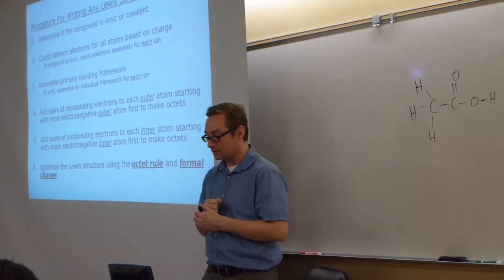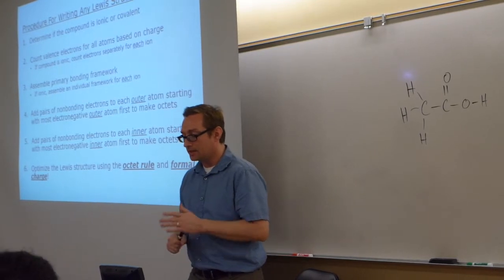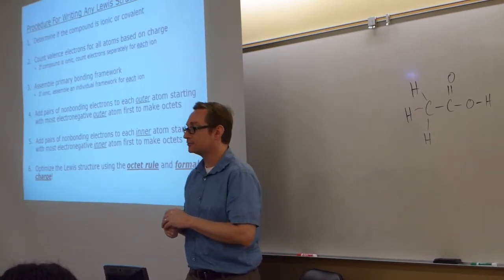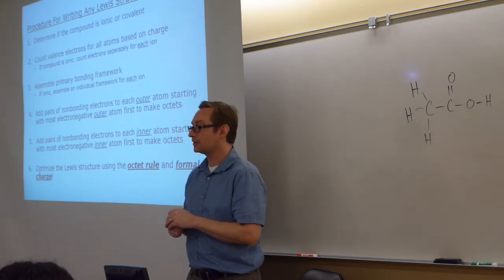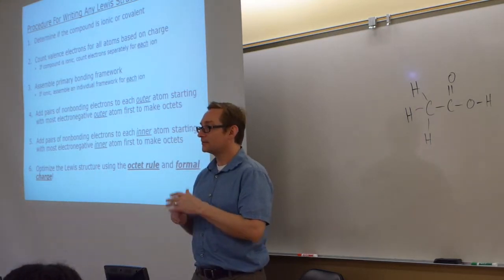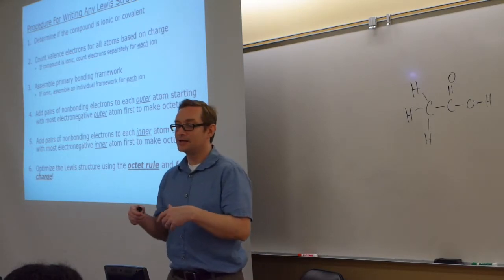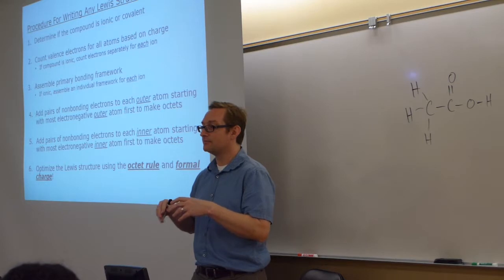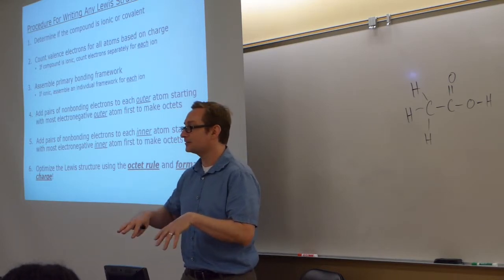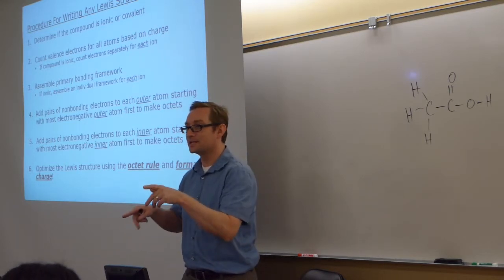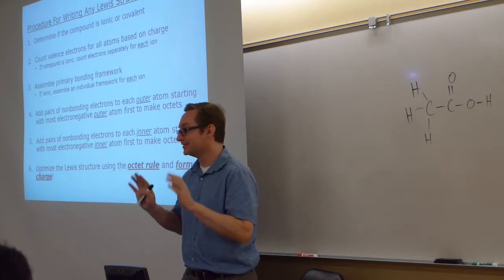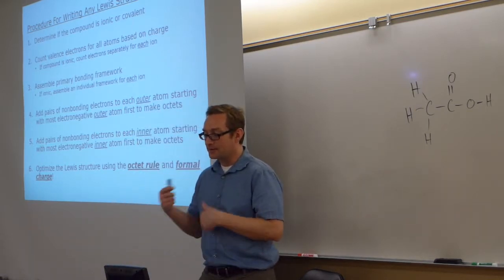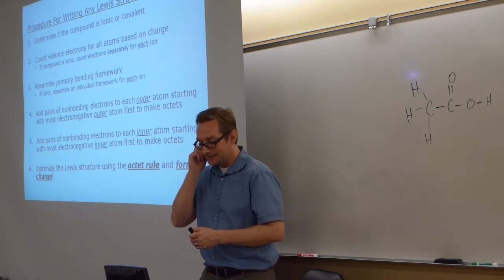The next step is to optimize the Lewis structure using the octet rule and formal charge. You may not have heard the term formal charge in Chem 107 — I used to call it 'matching the valence of the free atom.' Now we're going to call it formal charge.